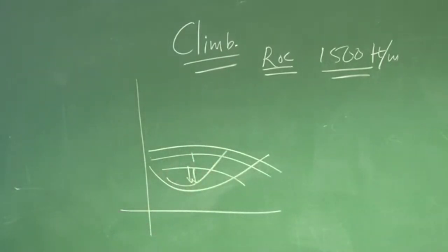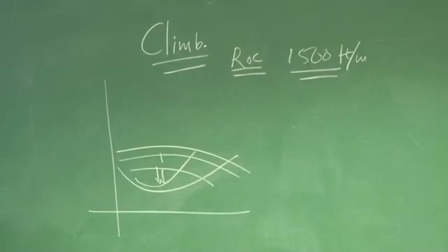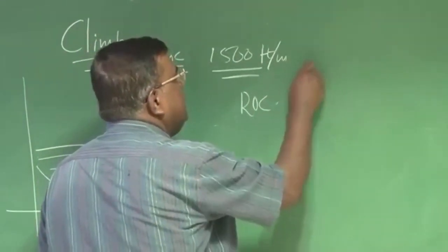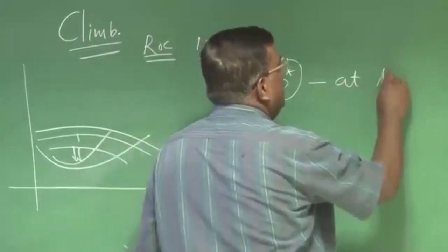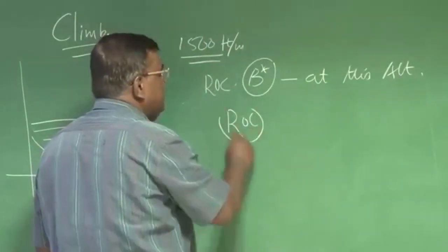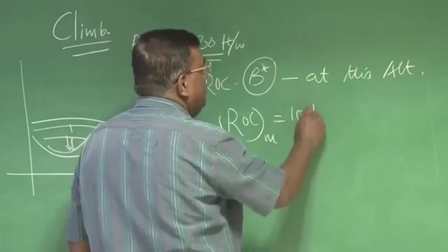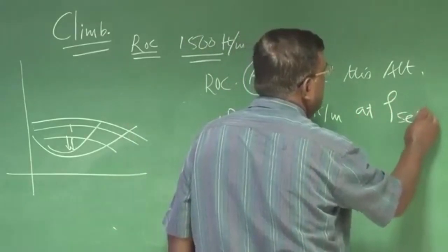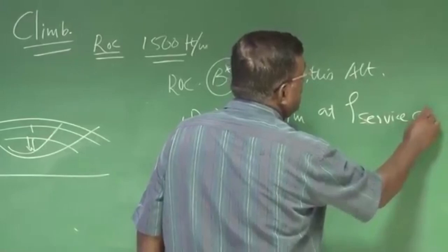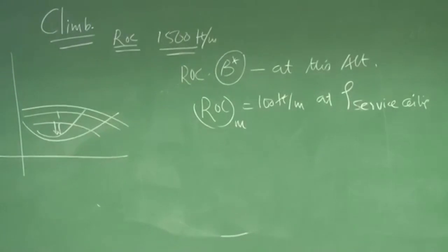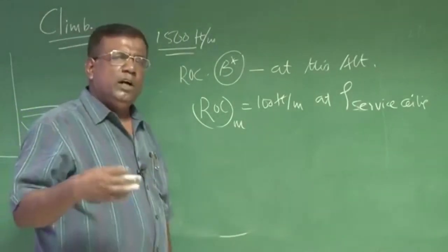So if you are trying to ensure that yes, it should have a particular rate of climb, let us say rate of climb B star, this much rate of climb at this altitude. To be more specific, suppose I want rate of climb maximum, it is 100 feet per minute at sea level or service ceiling. What is service ceiling? Service ceiling is that altitude at which rate of climb is 100 feet per minute. That indirectly tells you up to what altitude you can climb.